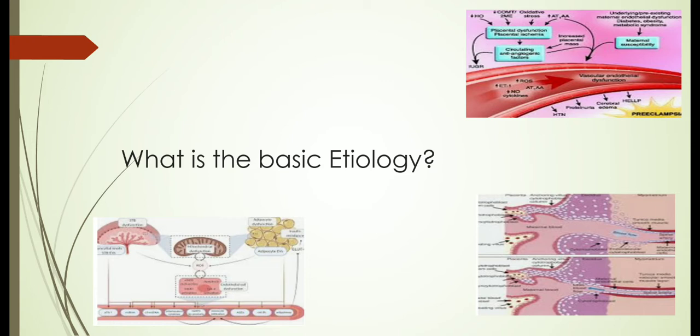Basically in preeclampsia we have primary placental pathology, and most of its signs are due to secondary involvement of other systems. So we have primary placental pathology first of all, and secondly we have secondary involvement of other organ systems.